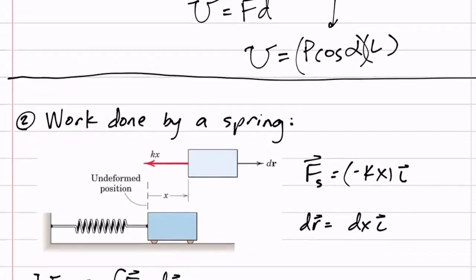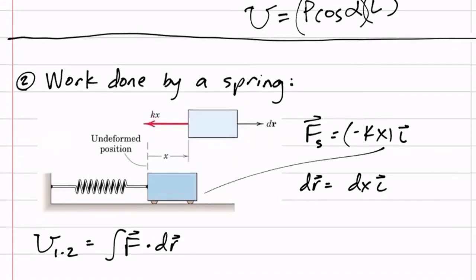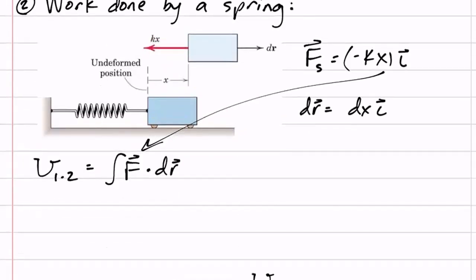For the work done by a spring: if we integrate with respect to X, we'd get something like X squared over 2. The work done by a spring would be one-half K times X₁ squared minus X₂ squared. We can use that equation if we want to know the work done by a spring — we don't have to say the force is KX and integrate.